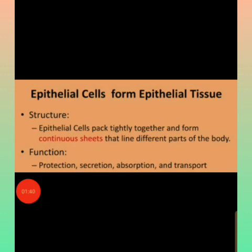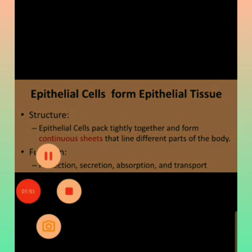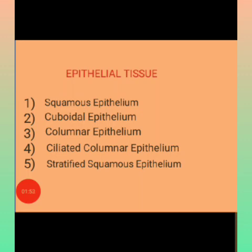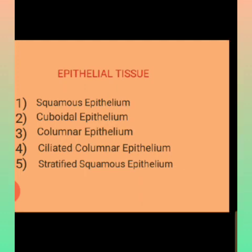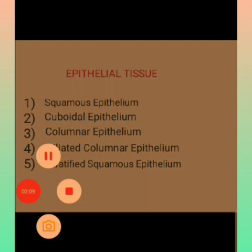Epithelial tissues consist of cells that are tightly packed together, meaning there is no space between them. There are five different kinds of epithelial tissues: squamous epithelium, cuboidal epithelium, columnar epithelium, ciliated columnar epithelium, and stratified squamous epithelium.